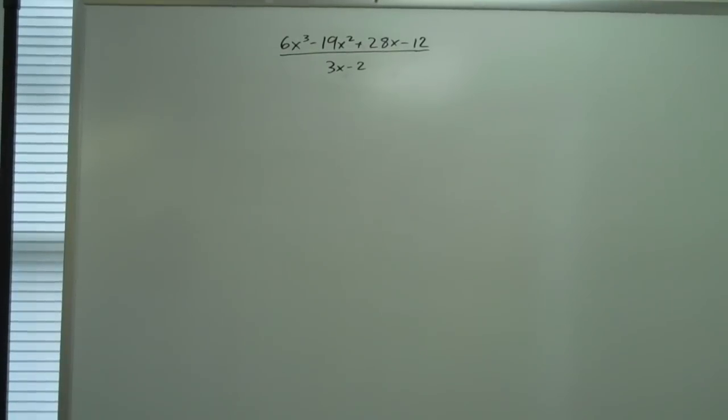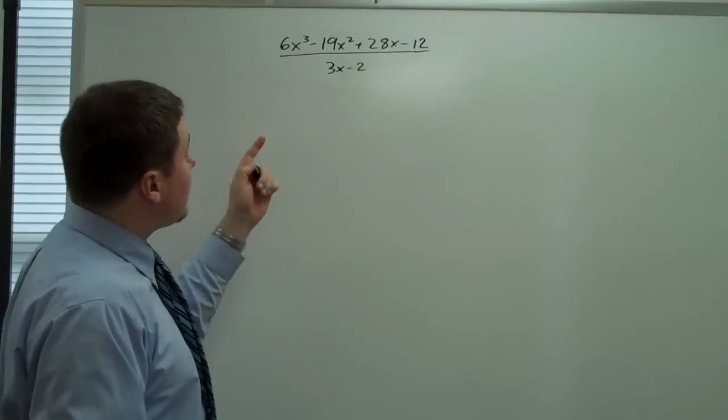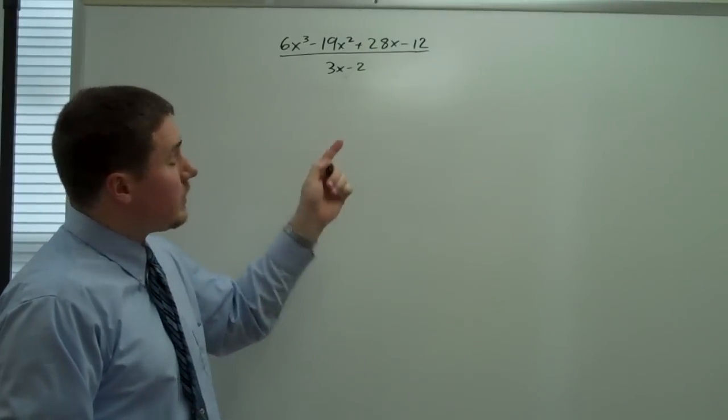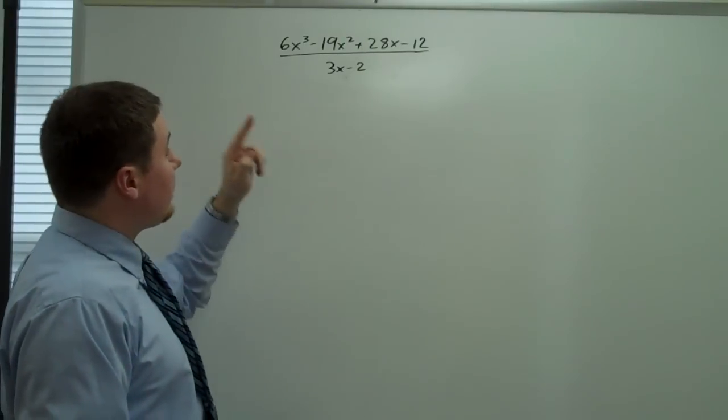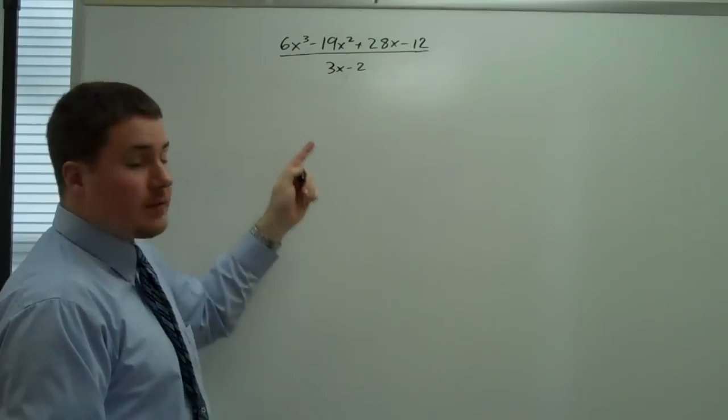For our next synthetic division problem, we're going to try to divide 6x to the third minus 19x squared plus 28x minus 12 by the linear factor 3x minus 2.